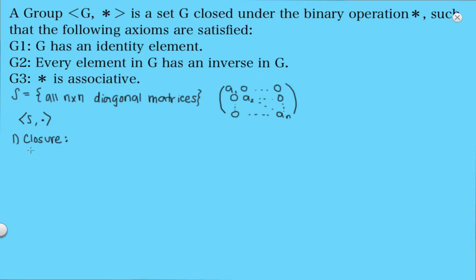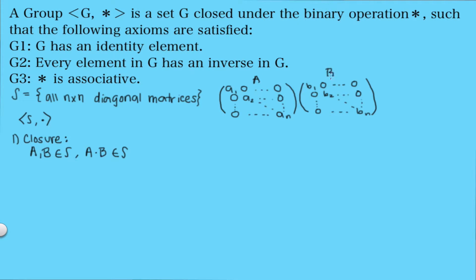First we need to check for closure. If A and B are both n by n diagonal matrices — both in our set S — we need to show that A times B is also in S. When we multiply them out, we get a matrix with diagonal entries A₁B₁, A₂B₂, ..., AₙBₙ, which is again a diagonal matrix and therefore in S. You may want to review matrix multiplication if this is unclear.